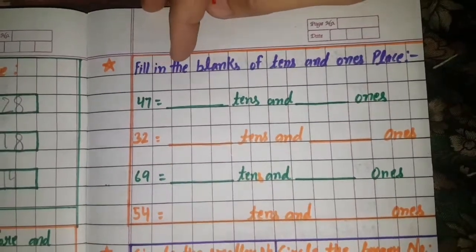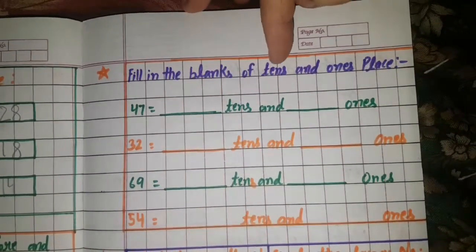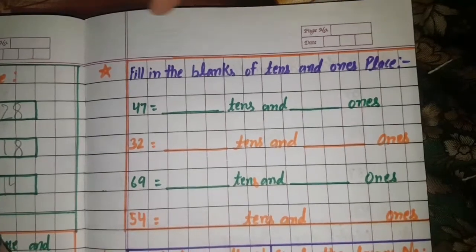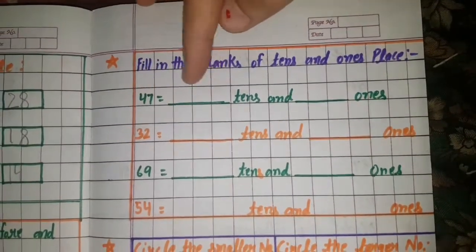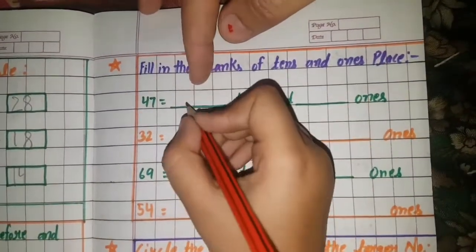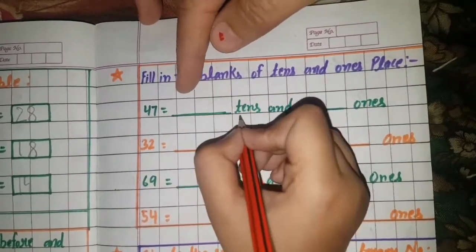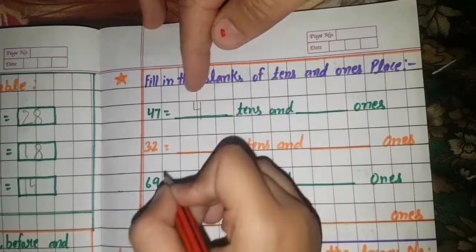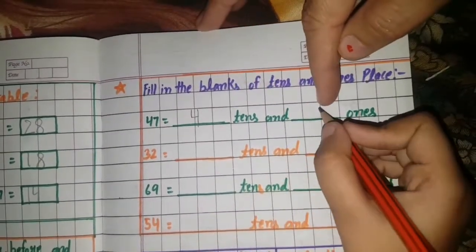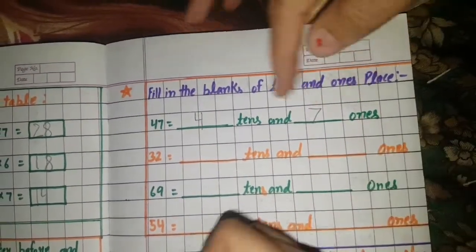Fill in the blank of tens and ones place. 47. How many tens are there? 4 tens and 7 ones.